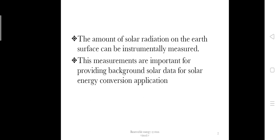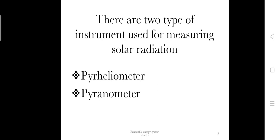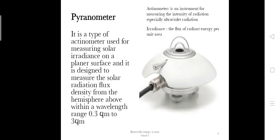For solar energy conversion applications, there are two types of instruments basically used for measuring solar radiation: pyrheliometer and pyranometer. First, we'll see about the pyranometer.